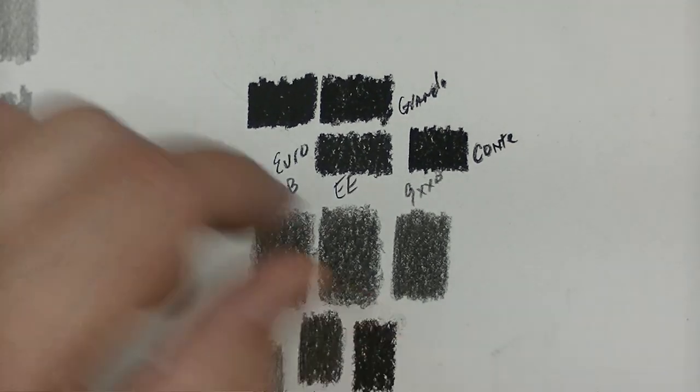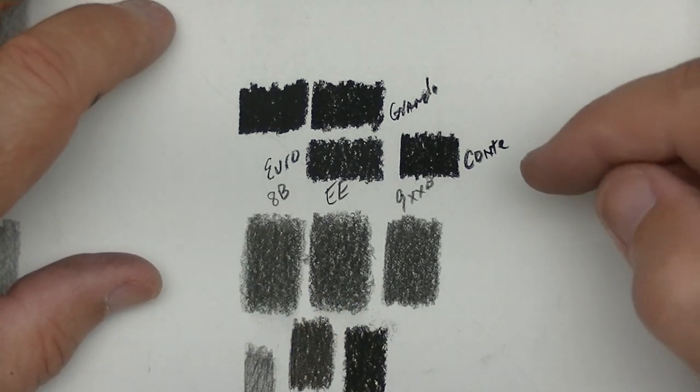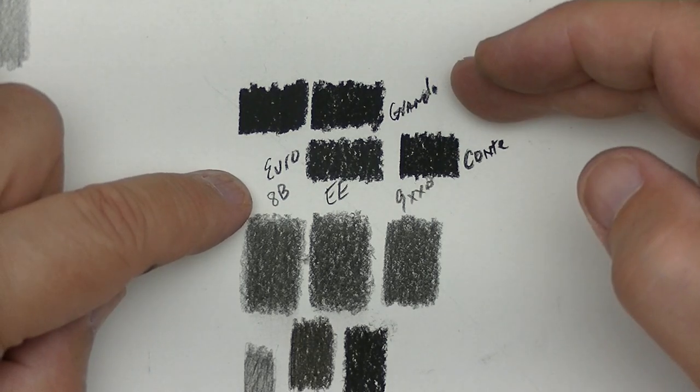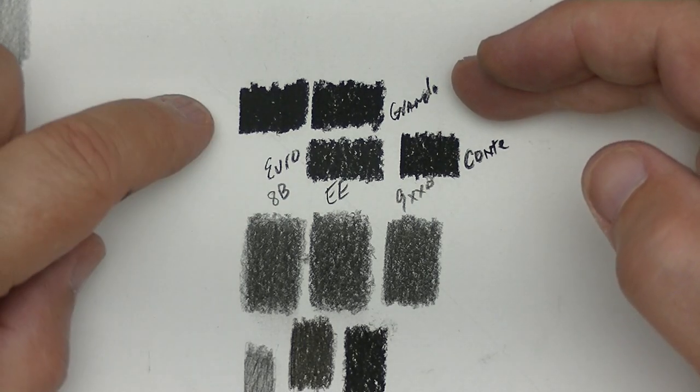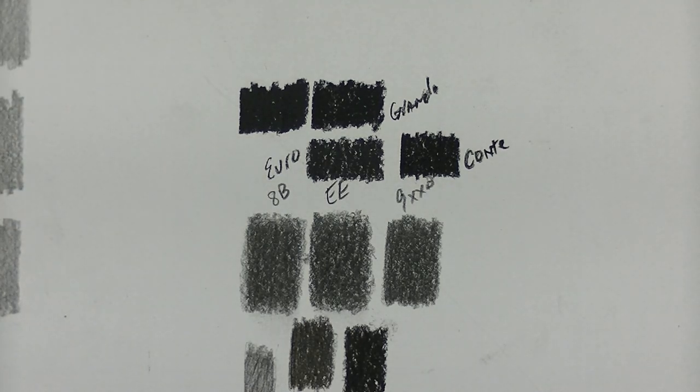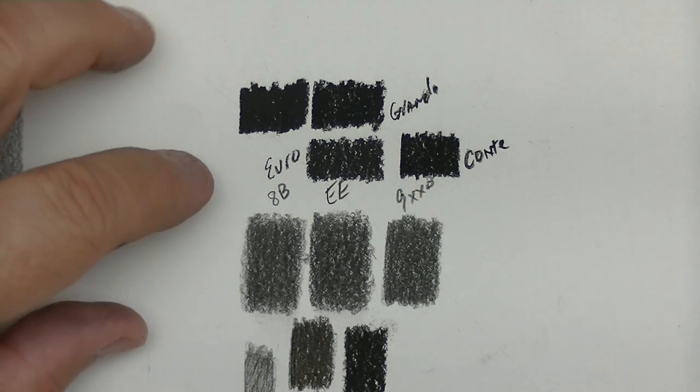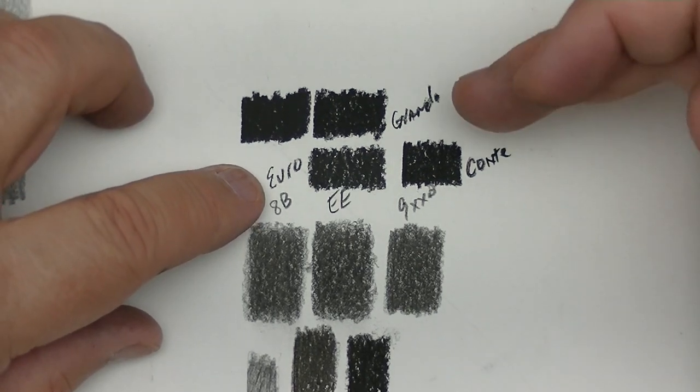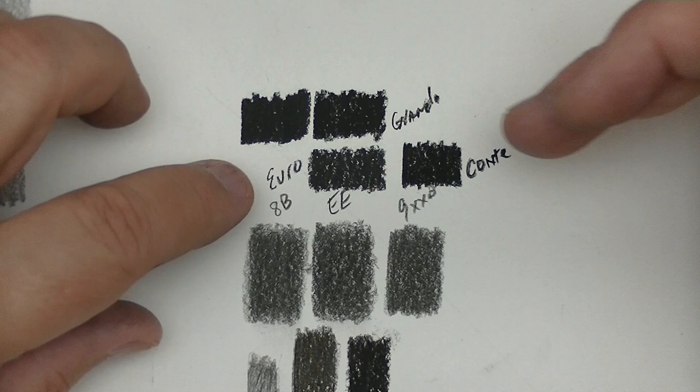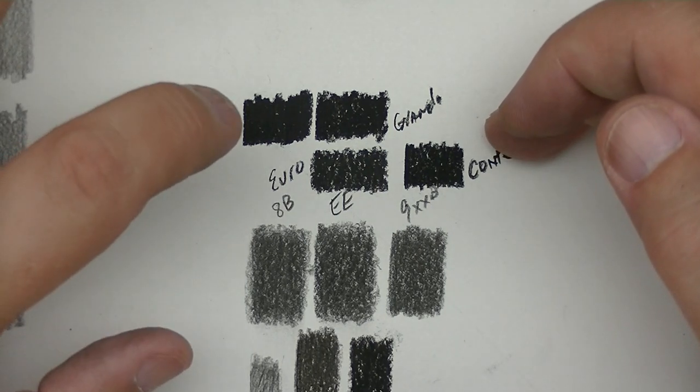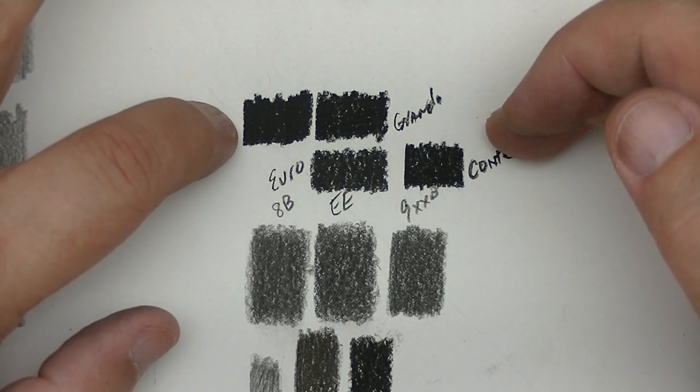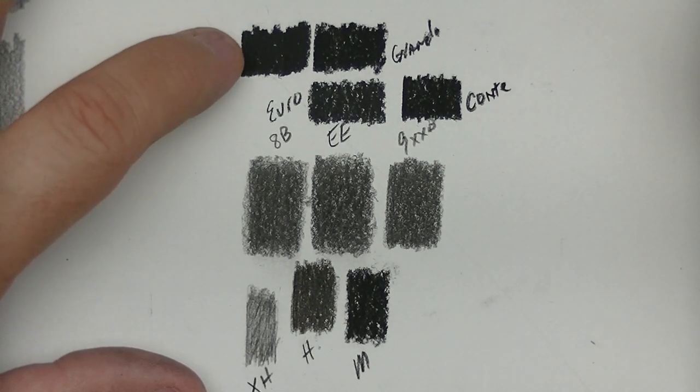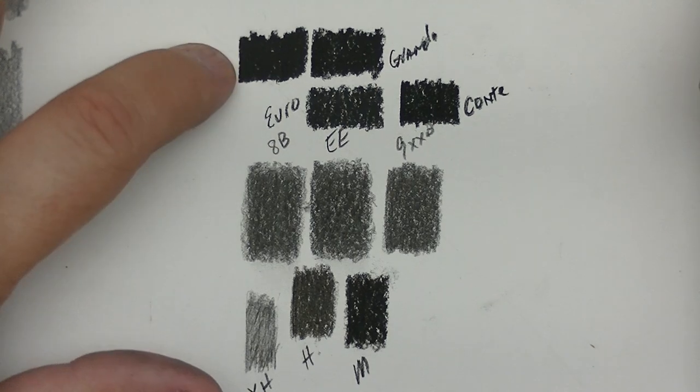And then, if you really want to see the king of kings, of course, then you're getting into, for example, the Euro, Conte, Grande, and the Carbon. And if you want my opinion as to the order that they go in, I would have to say that you got the Euro, then you have the Grande, then the Conte, and then the Carbon is Master of Darkness, and I know nothing that is darker than that pencil-wise.